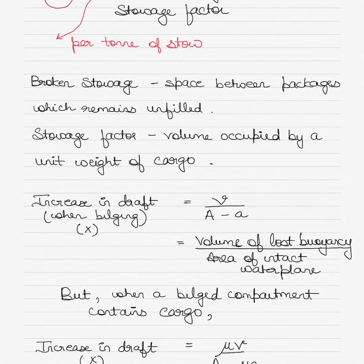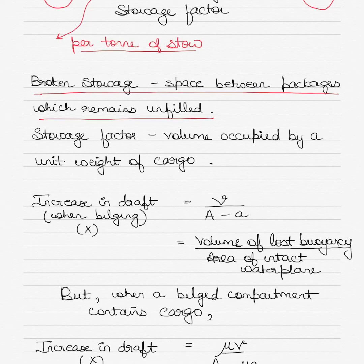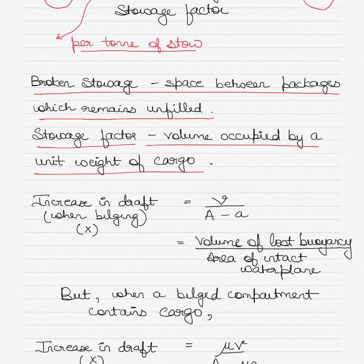Permeability is calculated by the formula: broken stowage divided by stowage factor, multiplied by 100, expressed as a percentage. Broken stowage is calculated per ton of cargo stored. Broken stowage is defined as the space between packages that remains unfilled — if there are unfilled spaces between packages loaded in a cargo hold or tank, those are called broken stowage, and water can seep in there. Stowage factor is the volume occupied by a unit weight of cargo in a hold or tank.